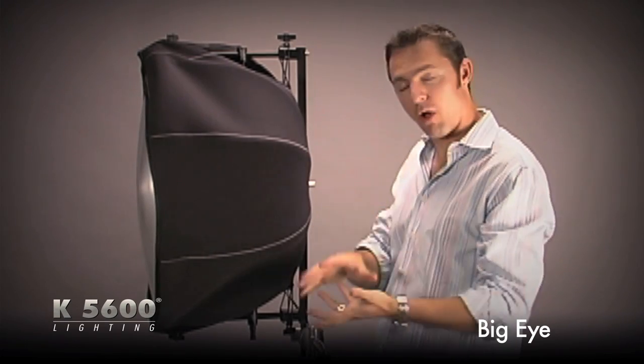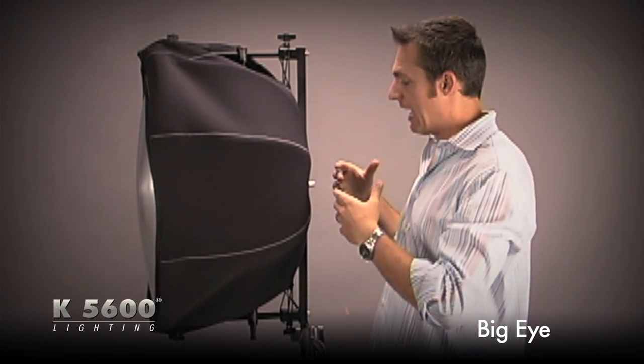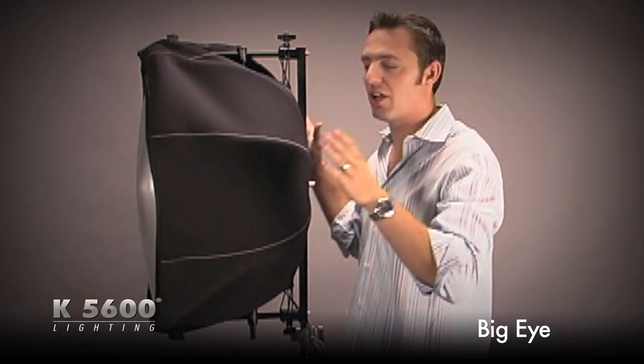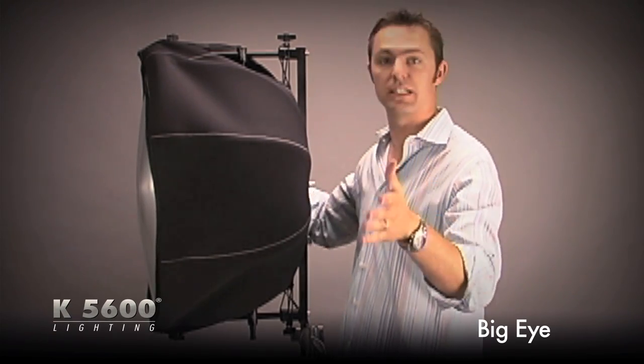it could be a Joker Bug, it could be a small wattage tungsten fixture, it could even be a flash head, and it gives me the ability to put that behind a Fresnel lens and get the pattern that I'm accustomed to seeing with a large 18K Fresnel.